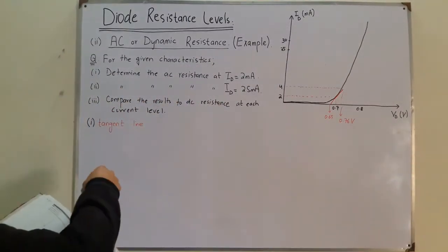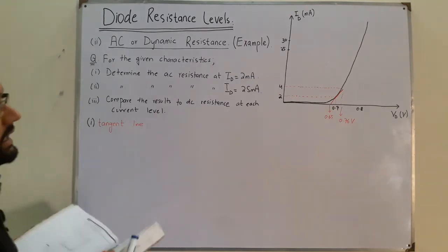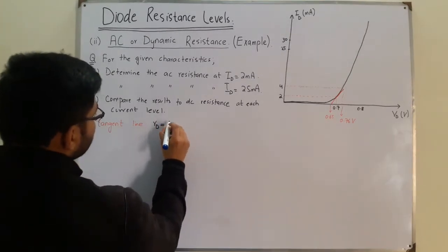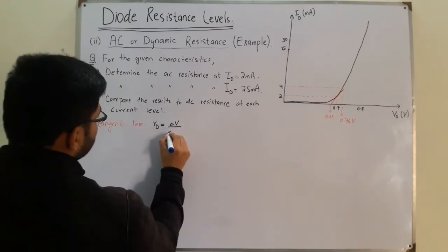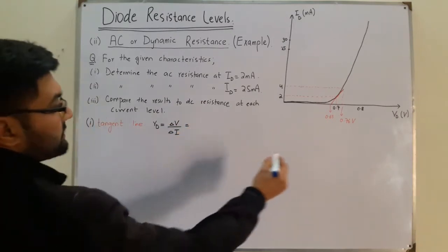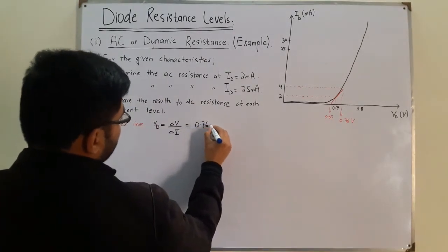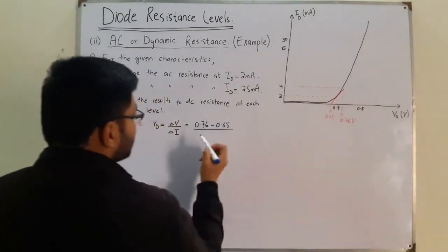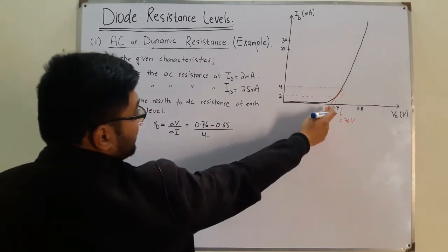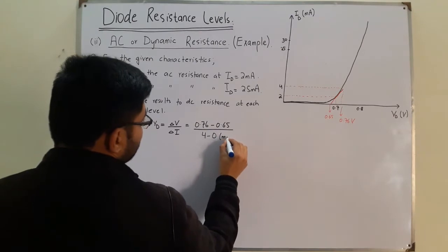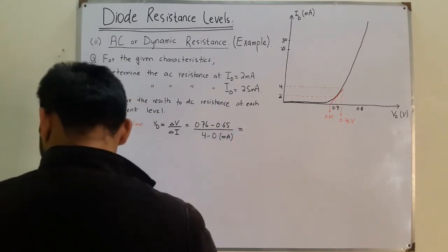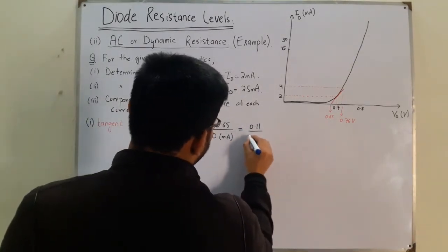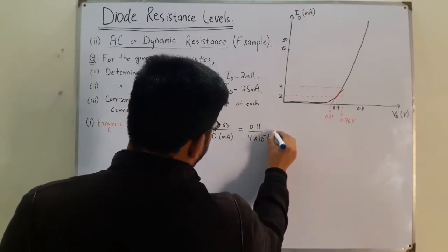So we have these two values — now we have the change of potential and the change of current, so we can find the AC resistance. That is given by Rd equals the change of potential divided by the change of current. The change of potential is 0.76 minus 0.65, and the change of current — the maximum current is 4 and the minimum is 0 — so 4 minus 0 milliamperes. This equals 0.11 divided by 4 times 10 to the power negative 3.